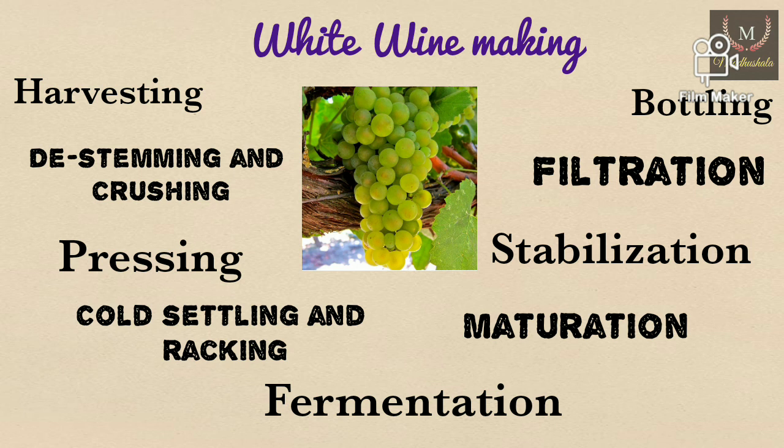Cold settling is an important step in white wine making. It is carried out at nearly 5 to 10 degrees centigrade for 2 to 3 days. This settles the solid matter, and the clear must is taken for fermentation. The further steps in making white wine are the same as for red wine. White wines are mostly enjoyed fresh, and only a few varieties benefit from aging.